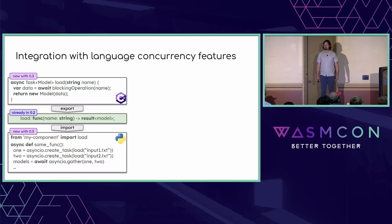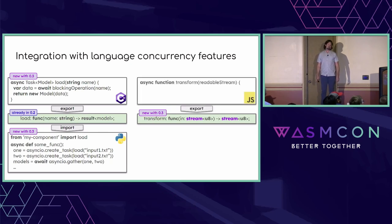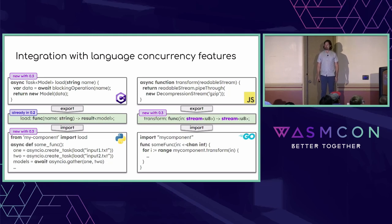I can also express more function signatures using the new future and stream types. I could write a transform function from a stream of bytes to a stream of bytes, and implement it in JavaScript with an async function that takes a readable stream. Because it's a built-in readable stream from the JavaScript standard library, I can use methods like pipeThrough and DecompressionStream. Then I could import this from Go, which allows a transform function taking a read-only channel and returning a read-only channel to iterate over using Go's built-in syntax.